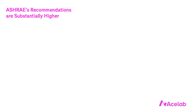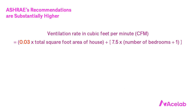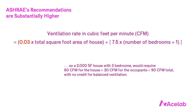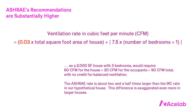ASHRAE's recommendations are substantially higher. ASHRAE recommends multiplying the area of the house by 0.03 rather than 0.01. Running the calculation for the same 2,000 square foot, three-bedroom house gives 60 CFM for the house plus 30 CFM for the occupants, totaling 90 CFM with no credit for balanced ventilation — about 2.5 times larger than the IRC recommendation. This difference is even more exaggerated in larger houses: that same three-bedroom house at 3,000 square feet would require 42 CFM under the building code but 120 CFM under ASHRAE, which is absolutely enormous.